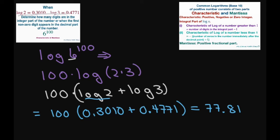Alright, since the characteristic here is 77, that's your characteristic of your log here. That means the integer part of the number 6 to the power of 100 is going to be 77 plus 1.